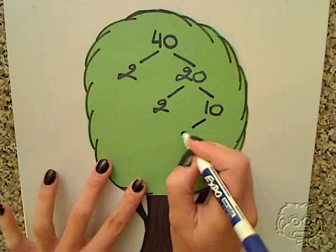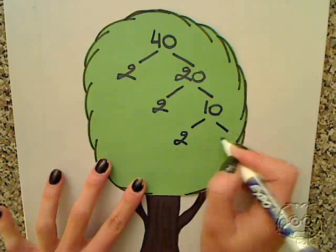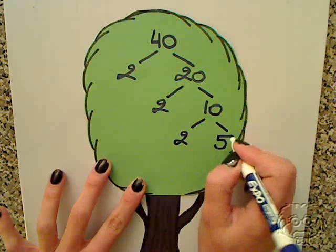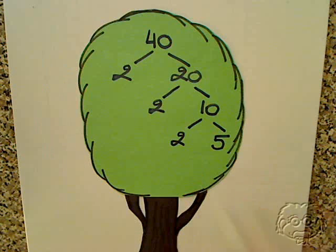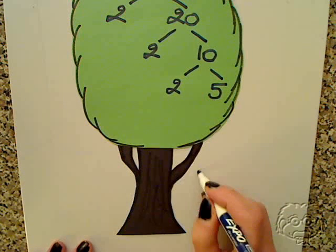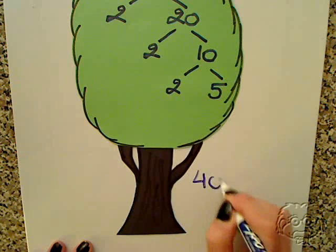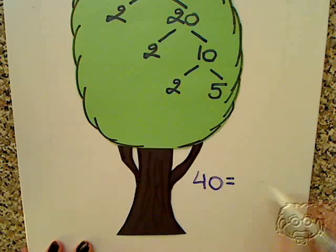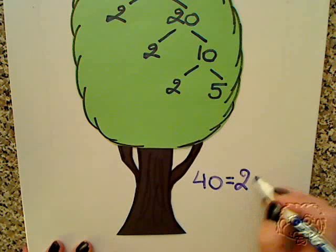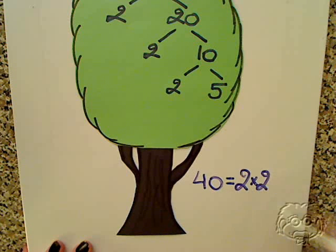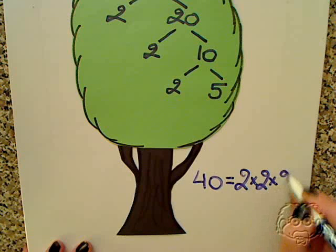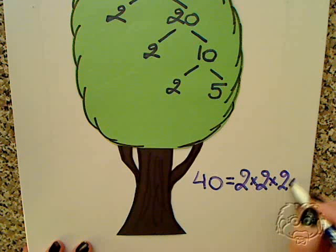10 can be divided by 2 and 5. 2 is a prime number. 5 is a prime number. Therefore we're done. So we can write that 40 equals 2 times 2 times 2 times 5. And we got that thanks to our factor tree.